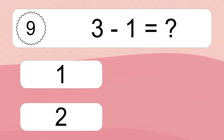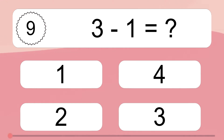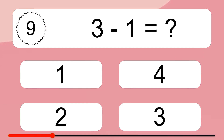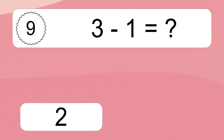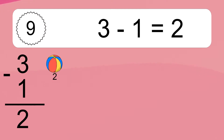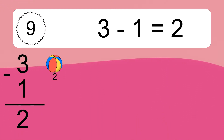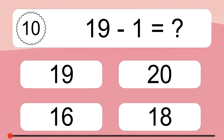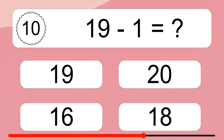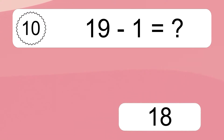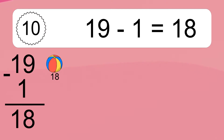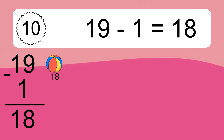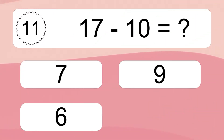3 minus 1 equals what? 3 minus 1 equals 2. Let's count it: 2. 19 minus 1 equals what? 19 minus 1 equals 18. Let's count it: 18.